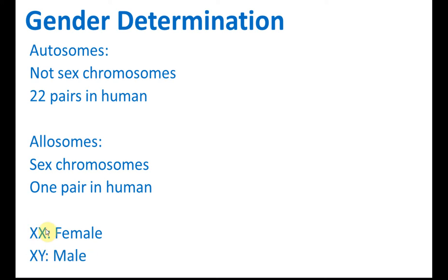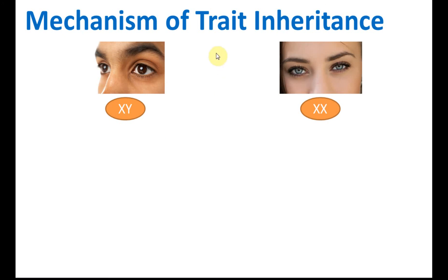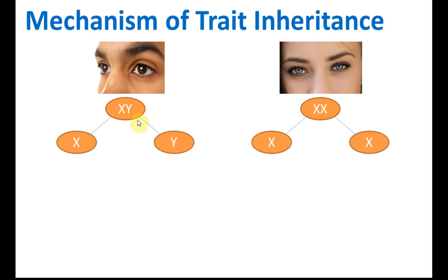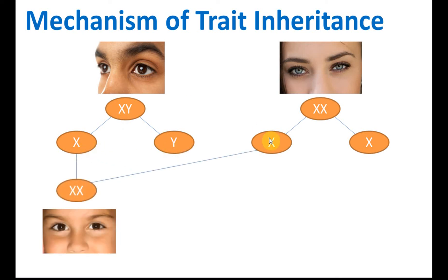Chromosomes always occur in pairs. If both are X, then it's female; if one is X and one is Y, then it's male. Make sure you remember this. Now, for mechanisms of trait inheritance — men carry XY and ladies carry XX. Let's see what happens during meiosis and reproduction. During meiosis, the chromosomes are separated into two.